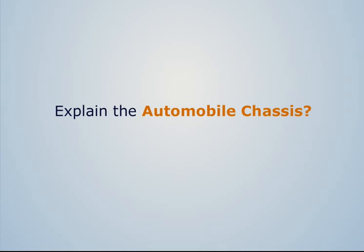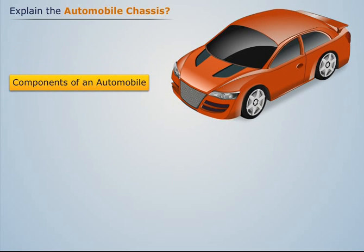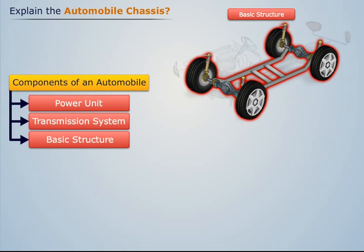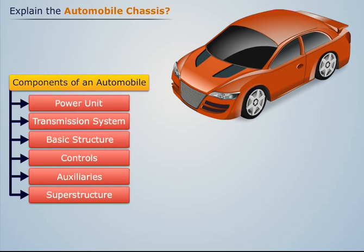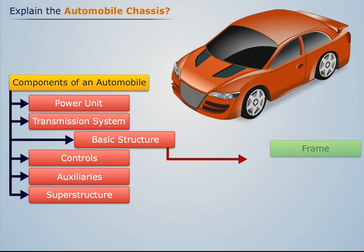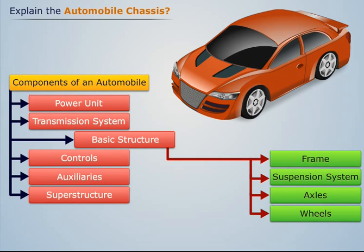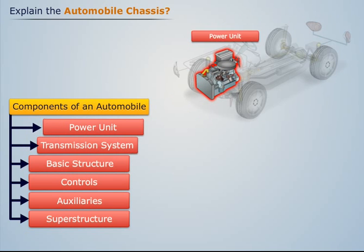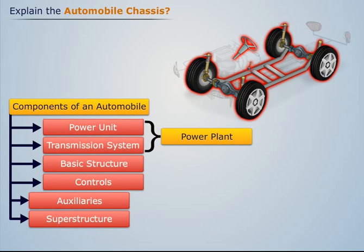Automobile parts can be broadly categorized into six components: power unit, transmission system, basic structure, controls, auxiliaries, and superstructure. The basic structure comprises mainly the frame, suspension system, axles, and wheels. The controls mainly comprise the braking system and steering system. The power unit and transmission system are collectively known as the power plant of the automobile, whereas the basic structure and controls are collectively known as running gear.